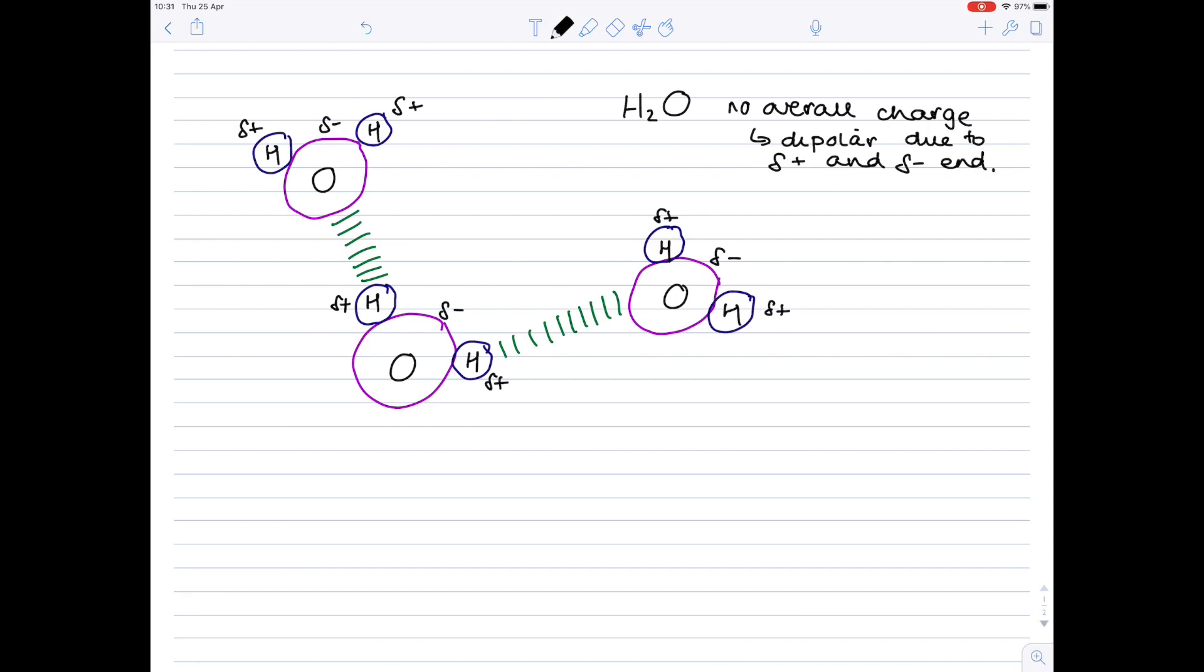And as we know, in all science, the opposites attract. So actually, as you look at this, you can see that the slightly negative oxygen is attracted to the slightly positive hydrogen here. The slightly positive hydrogen is attracted to the slightly negative oxygen here. And we call this interaction and attraction hydrogen bonding.